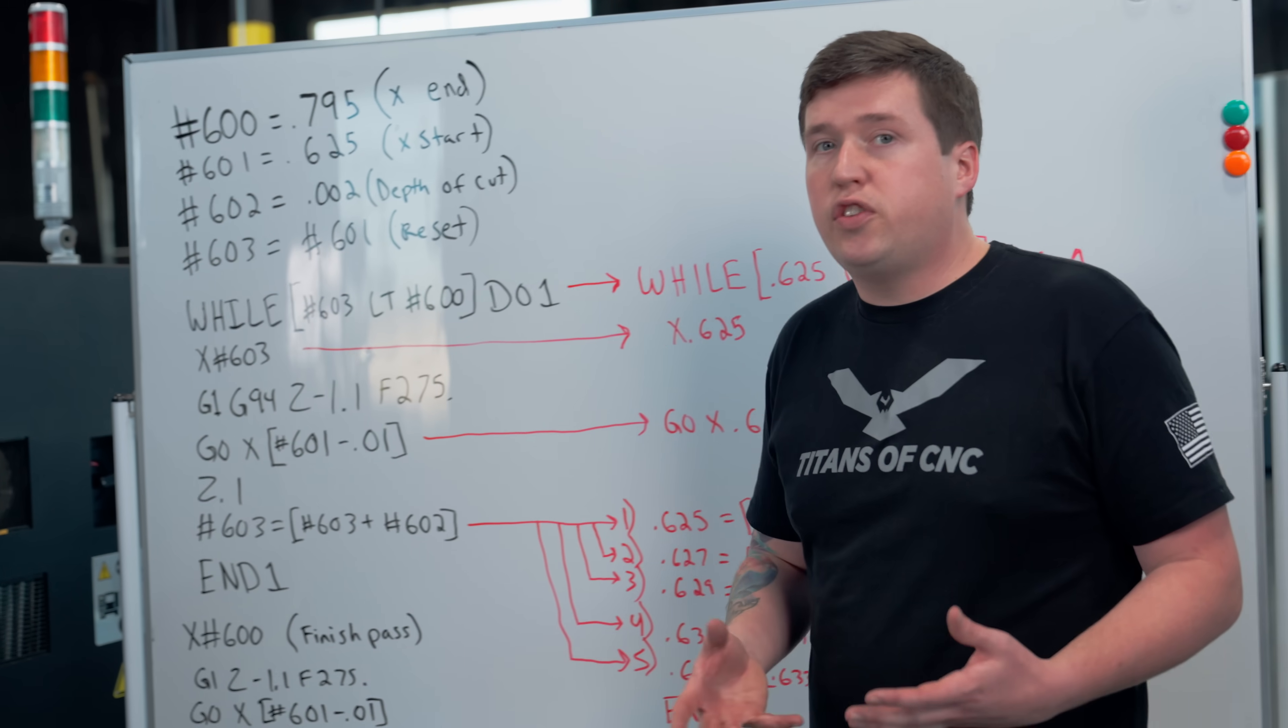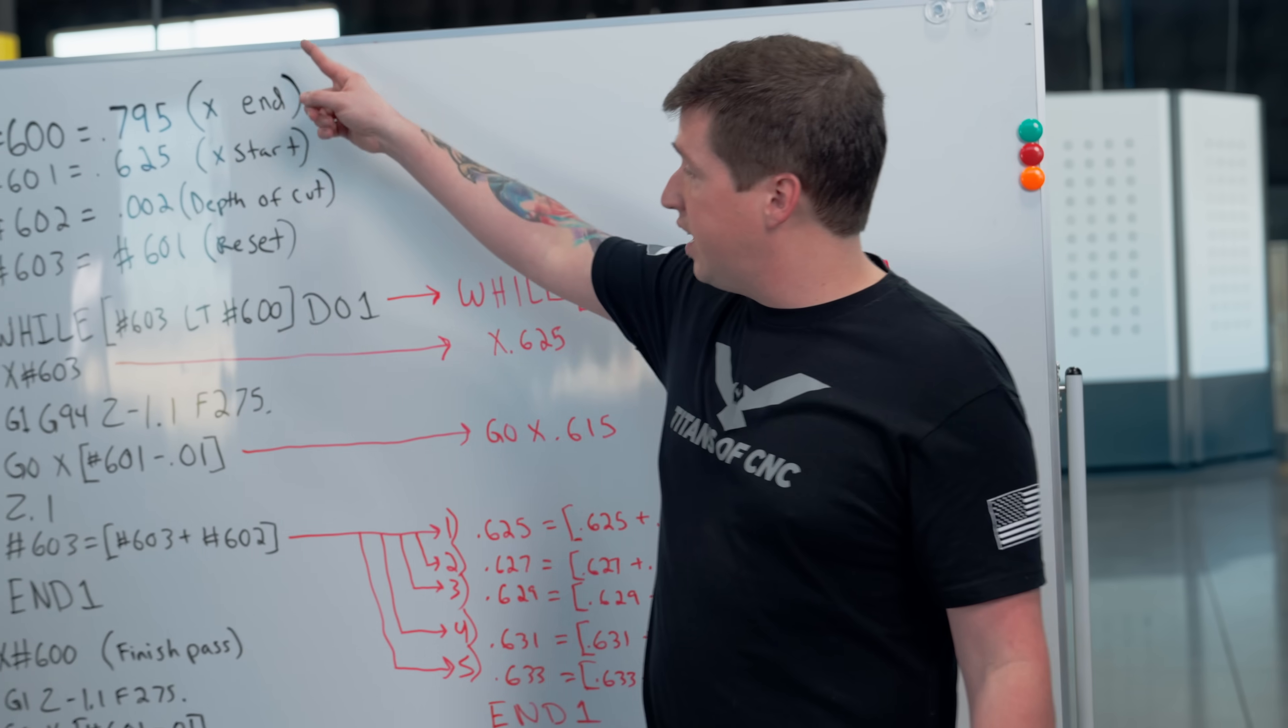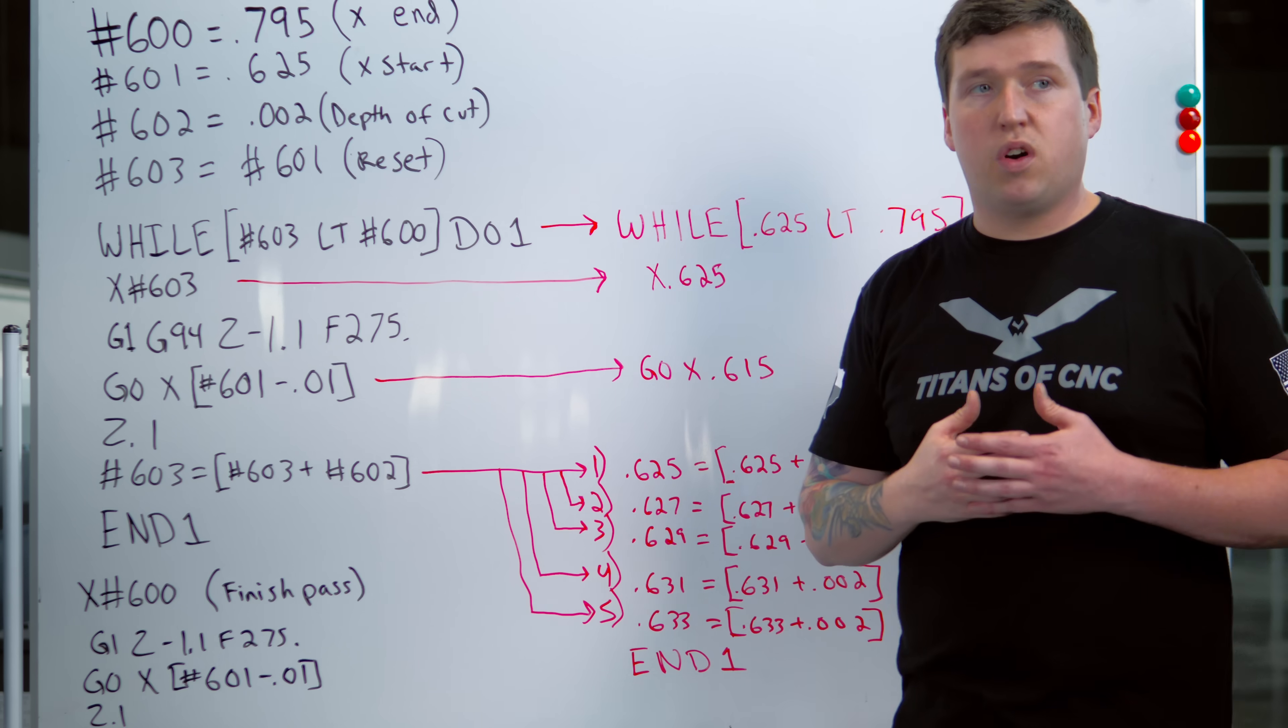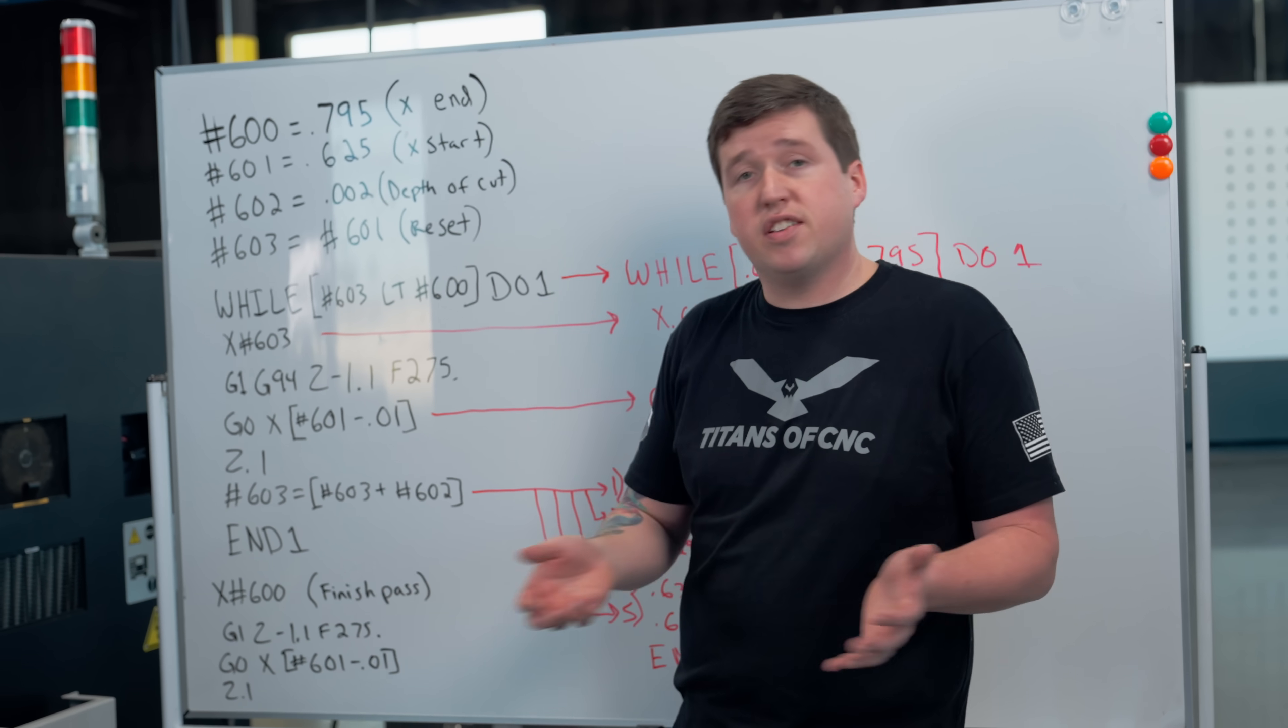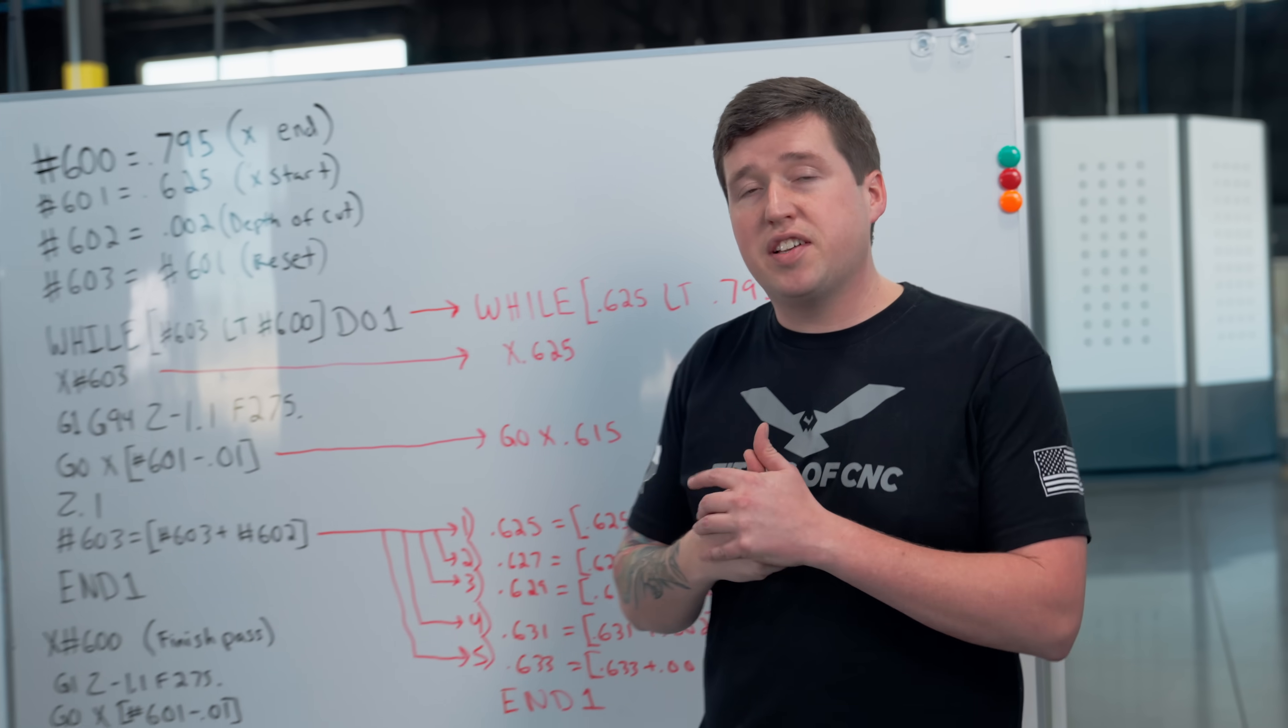If you're doing any keyway broaching, you can copy this macro right here and it should work on pretty much any machine. If your machine doesn't have pound 600s, then use pound 100s. If it doesn't have that, use pound 500s.